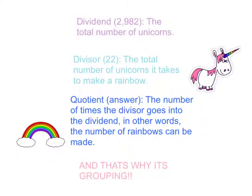The dividend, 2,982, in this case is the total number of unicorns. The divisor, 22, in this case is the total number of unicorns it takes to make a rainbow.